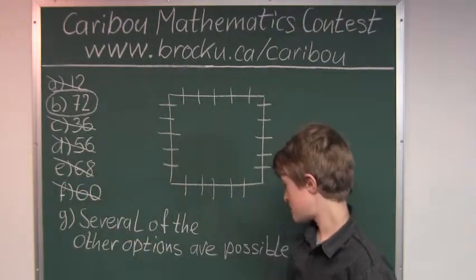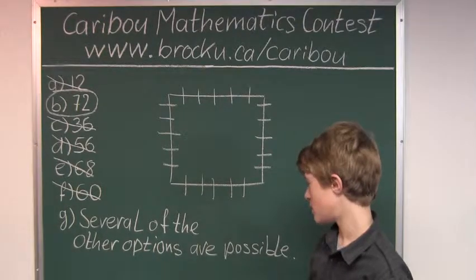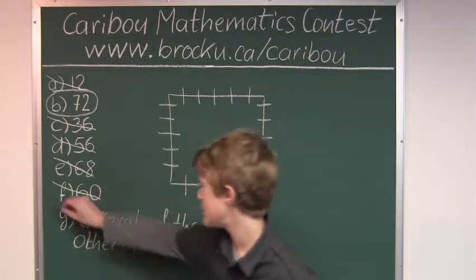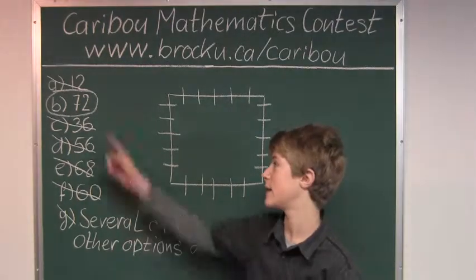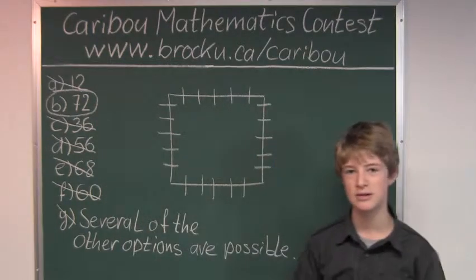So now let's look at G. Several of the other options are possible. Well, we know that G is wrong because only one number is correct and that is 72. So 72 is the answer.